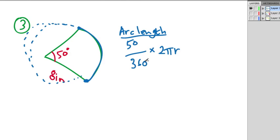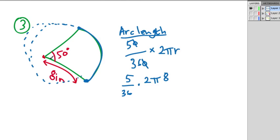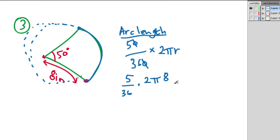We can simplify the fraction — both have a factor of 10, so the zeros cancel giving us 5 over 36, times 2, times π, times 8. The 8 is our radius, from the center to the outside of the circle. Handling the numerator first: 5 times 2 is 10, times 8 is 80. So this becomes 80 over 36 times π.